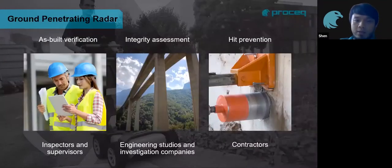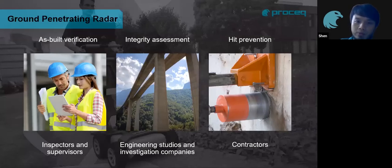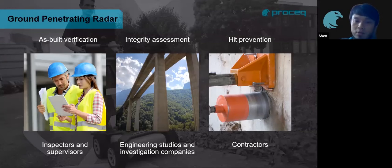Ground penetrating radar is used in three core functions in the industry. First, SBU verification — for inspectors to check on buildings after they are built and verify structures are built to standard. The second is integrity assessment, used by engineering studios and investigation companies to assess old buildings where they don't have any drawings to start with.